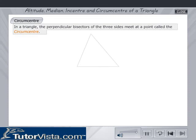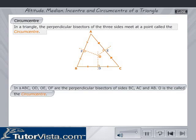Circumcentre of a triangle. In a triangle, the perpendicular bisectors of the three sides meet at a point called the circumcentre. In triangle ABC, OD, OE, OF are the perpendicular bisectors of sides BC, AC and AB respectively. O is the circumcentre.